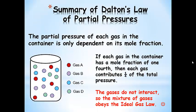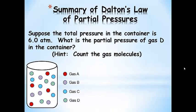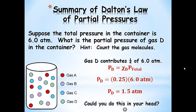To summarize: the partial pressure of each gas in a container depends only on its mole fraction. If each gas has a mole fraction of one-fourth, then each gas contributes one-fourth of the total pressure. The gases don't interact with each other, so the mixture obeys the ideal gas law. For a conceptual problem: if the total pressure is 6 atmospheres, gas D contributes one-fourth, so 0.25 times 6 atmospheres equals 1.5 atmospheres.